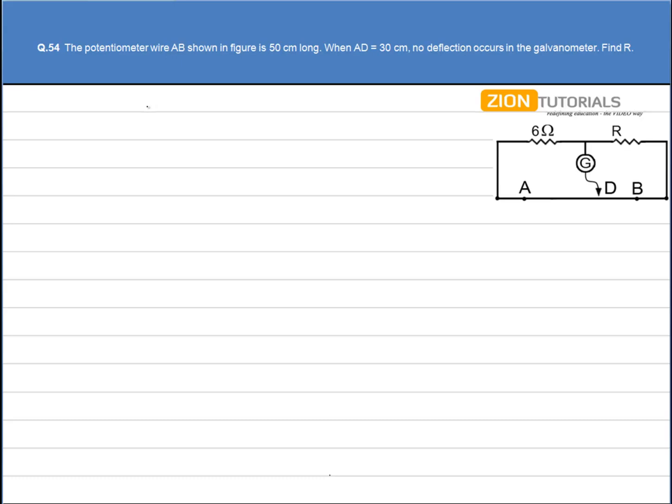Now the potentiometer works on the concept of the Wheatstone bridge. That is, if the resistance 6 ohm divided by R ohm is equal to the resistance of wire AD divided by resistance of wire DB, then no current will flow through the galvanometer.